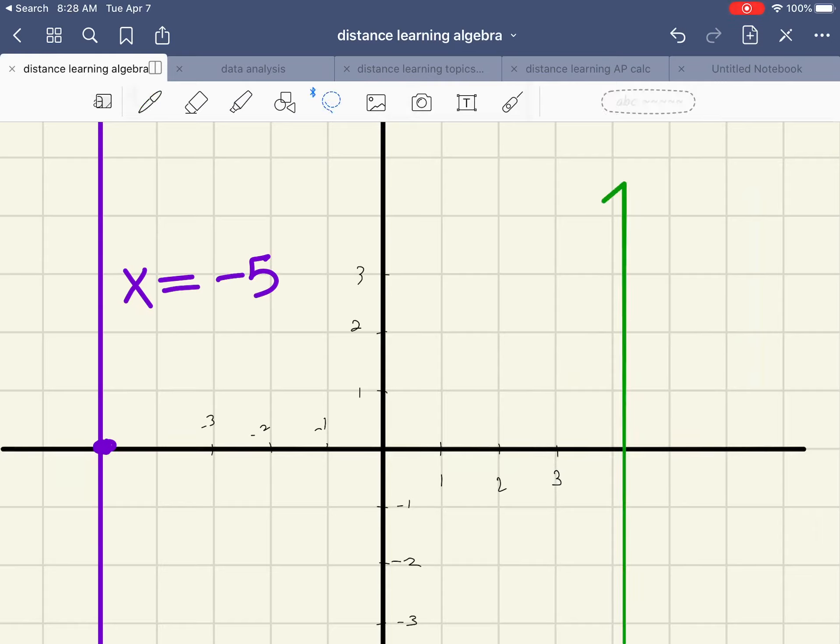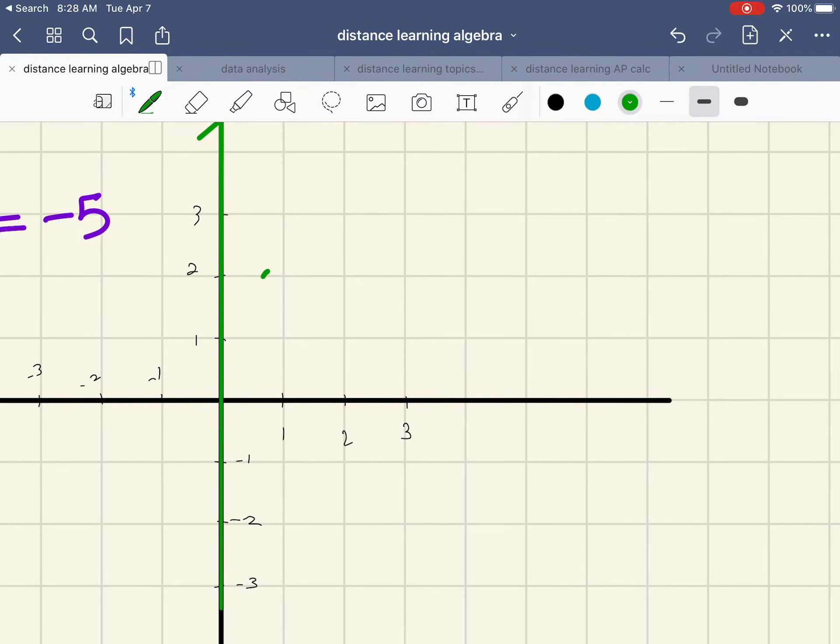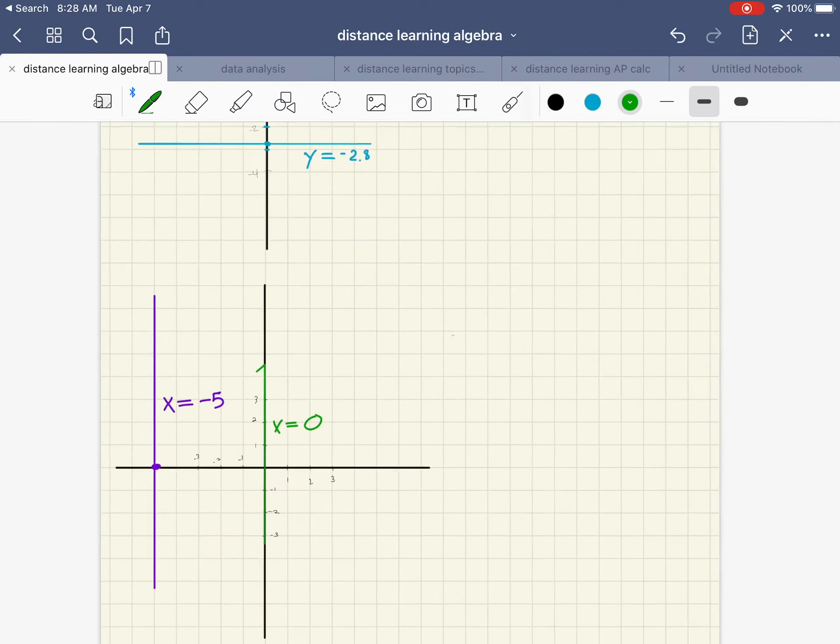If I draw another line here and I put it, let's do this. It actually coincides with the y-axis. We're going to say x equals, and on the x-axis that is zero. So this is the line x equals zero. That's all you have to do to write an equation for the x-axis.